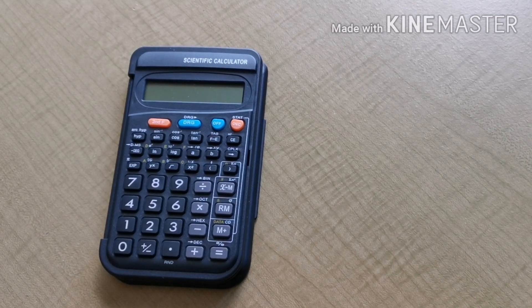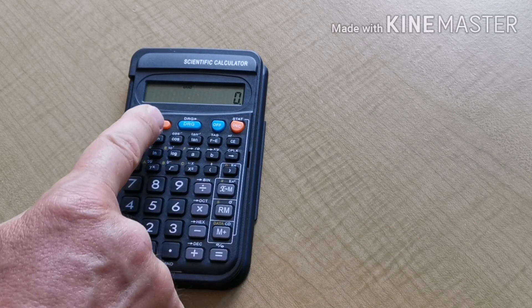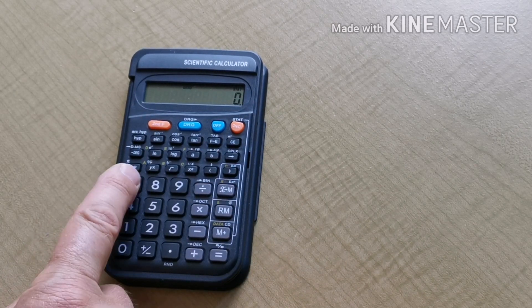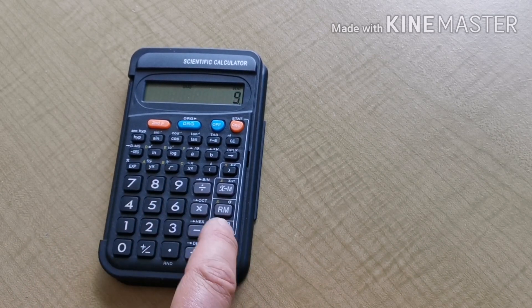We now look at stat mode on this very simple unbranded calculator. Having turned it on, choose second function which brings up stat mode. Now enter the data: 7, data, 8, data, 9, data.